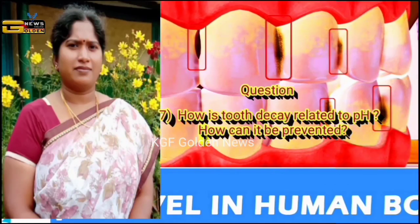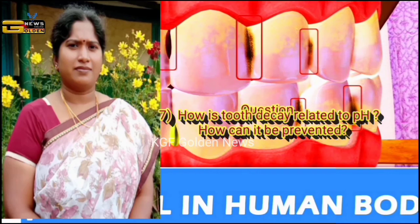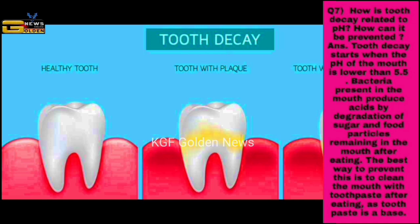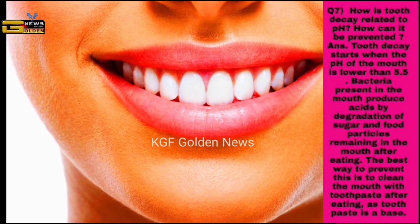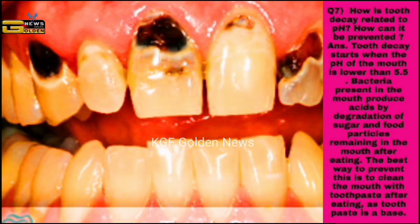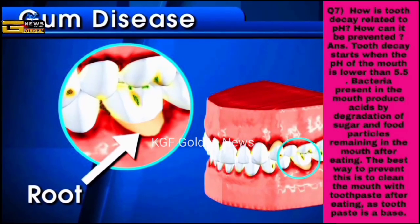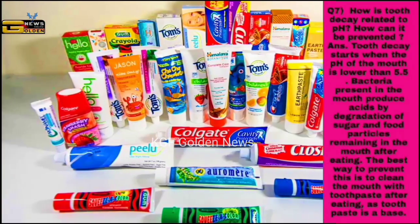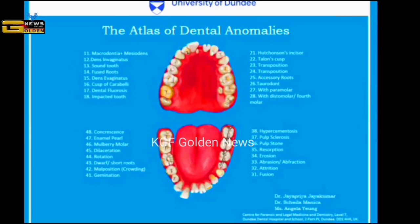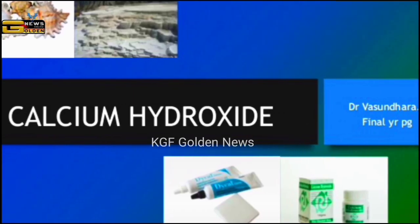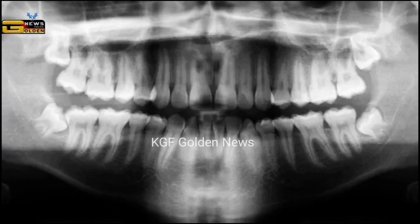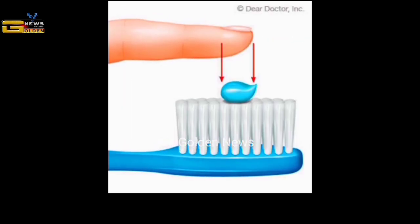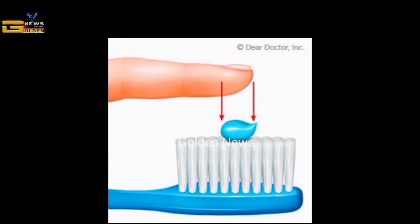Question number seven: how is tooth decay related to pH? How can it be prevented? The answer is, tooth decay starts when the pH of the mouth is lower than 5.5. Bacteria present in the mouth produce acids by degradation of sugar and food particles remaining in the mouth after eating. Tooth enamel is made up of calcium hydroxyapatite — it is the hardest substance in the body. It does not dissolve in water but is corroded when the pH in the mouth is below 5.5, i.e. acidic. Toothpaste is a base which neutralizes the excess acid and prevents tooth decay.